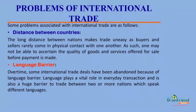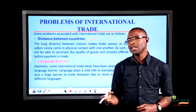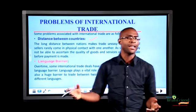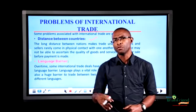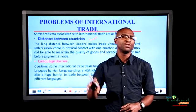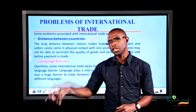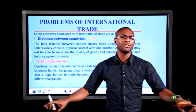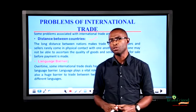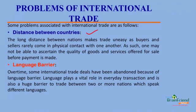Having looked at the reasons of international trade, let's consider problems of international trade. The first problem is distance between countries. The distance between Nigeria and Ghana, for instance, is long, and it will be difficult for a producer to practically ship goods from Nigeria to Ghana based on the long distance between both nations. You can see how distance causes a breach in international trade.